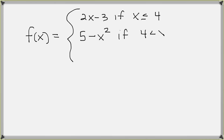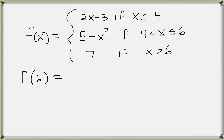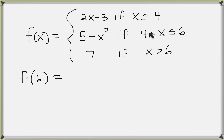I'm going to rewrite our function over here and next figure out what f of 6 is. Using the same procedure, we check each condition by plugging in 6. The first condition — 6 is less than or equal to 4 — is false. The second condition says 4 is less than 6 and 6 is less than or equal to 6, which is a true statement. So this is the condition that holds true for the number 6.